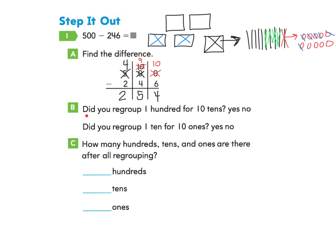Let's take a look at part B. Did you regroup 100 for 10 tens? Yes, we did take 100 and regroup it for 10 tens, so we can circle yes. The next question asks: did you regroup 1 ten for 10 ones? Remember when we took that 1 ten and regrouped it into 10 ones? Yes, we can answer yes for that as well.